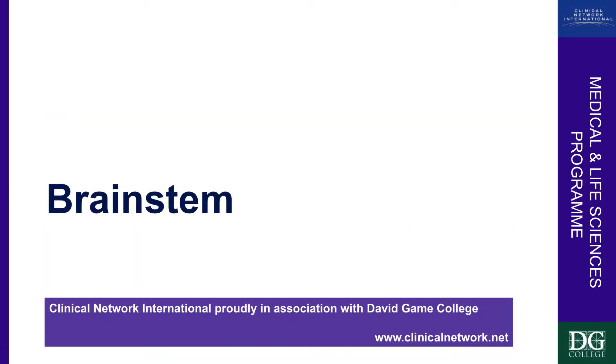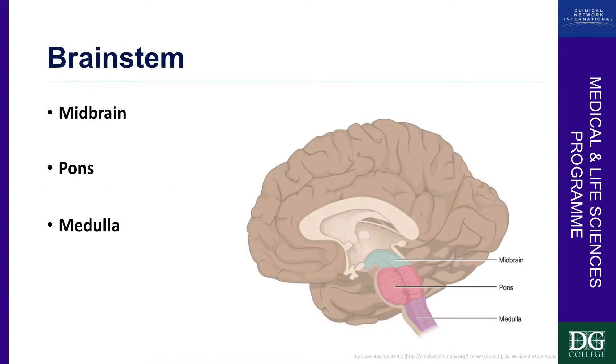Coming on to the brainstem. We talked about the cortex — the frontal cortex, the parietal cortex, the occipital cortex and the temporal cortex.